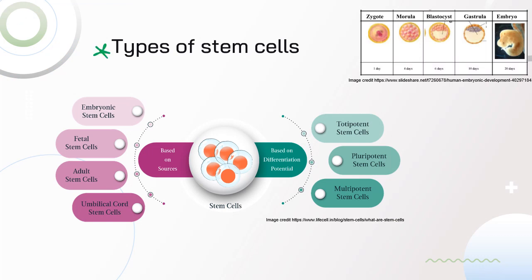We have quite a few different kinds of stem cells, and we can categorize them based on their potential to differentiate as well as their sources. Different sources include embryos — embryonic stem cells tend to have the most potential — as well as fetuses, the umbilical cord right at birth, and adult stem cells like bone marrow. The differentiation potential refers to how many different pathways these stem cells could go down.